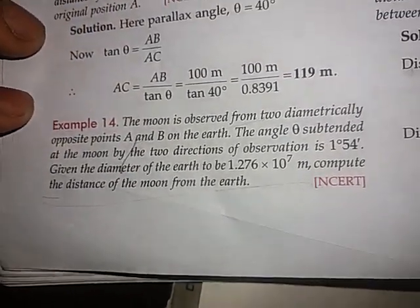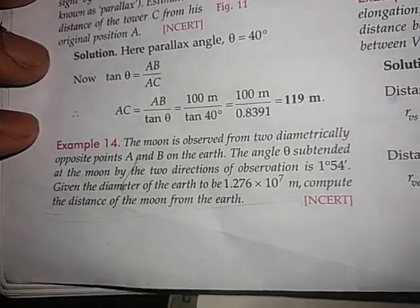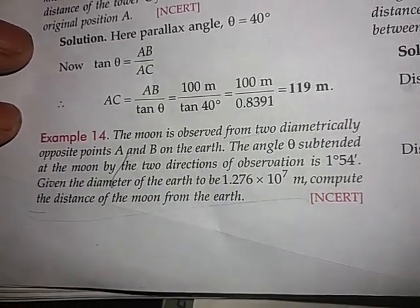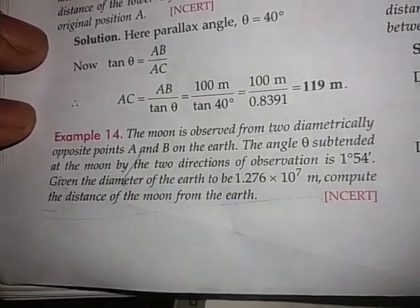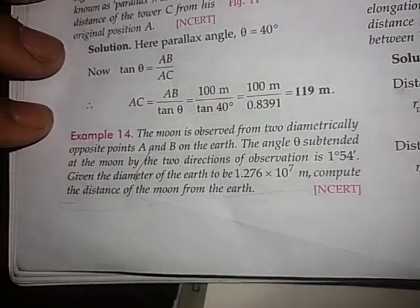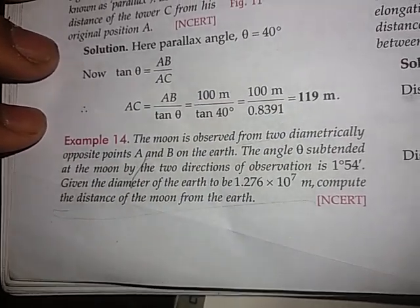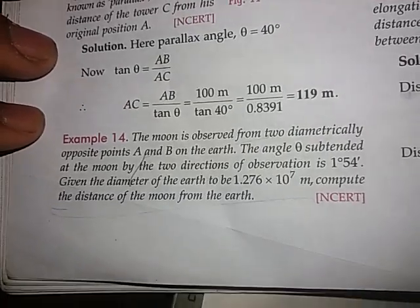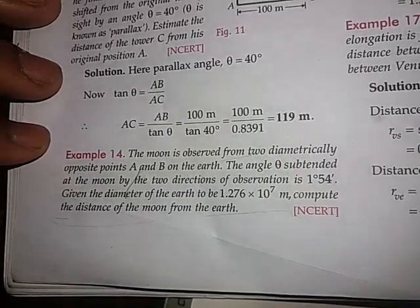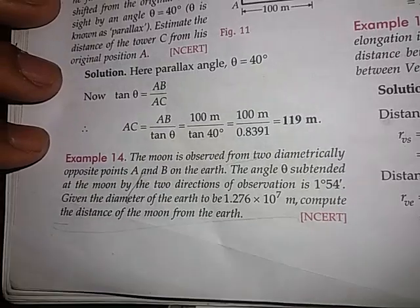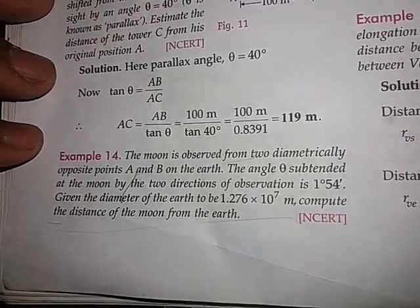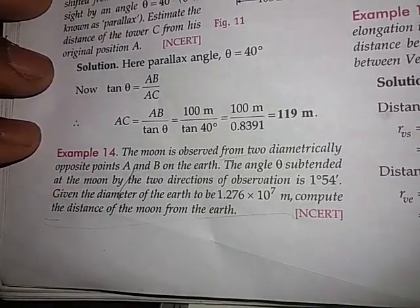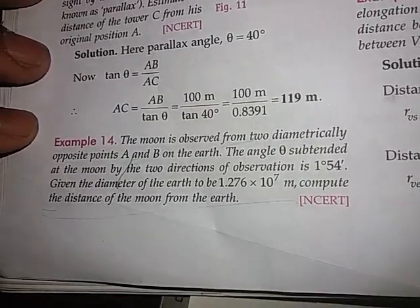The moon is observed from two diametrically opposite points A and B on the earth. The angle theta subtended at the moon by the two directions of observation is 1 degree 54 minutes. Given the diameter of the earth to be 1.276 × 10^7 meters, compute the distance of the moon from the earth.